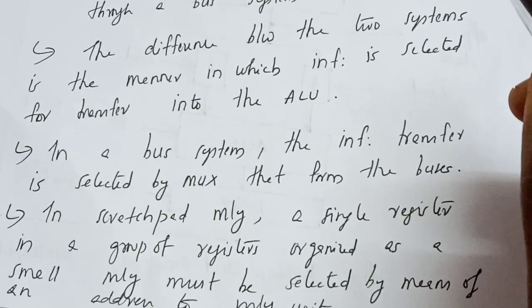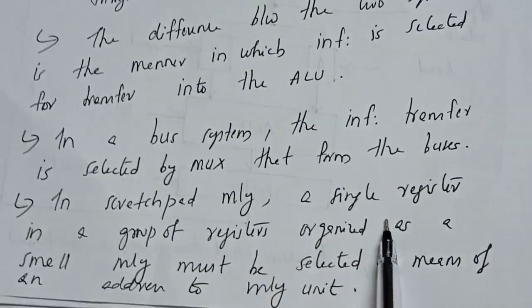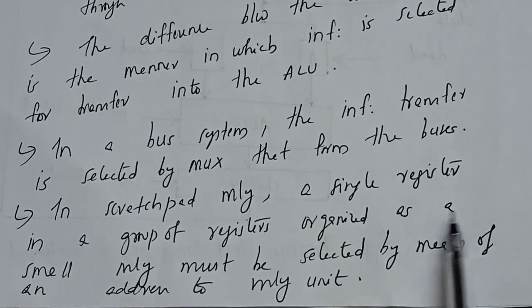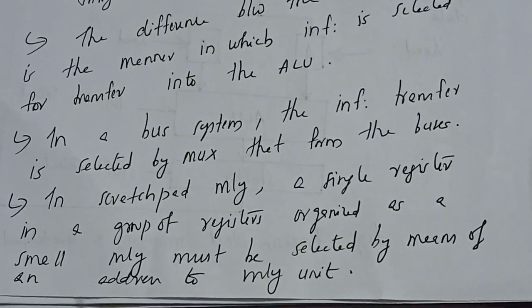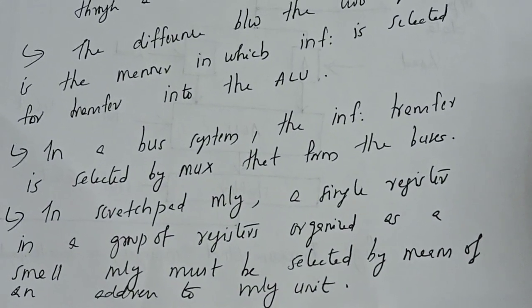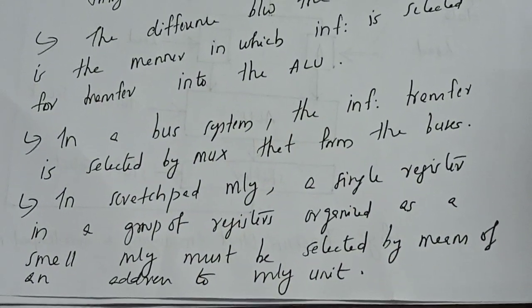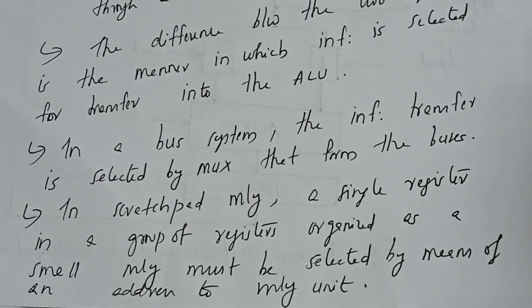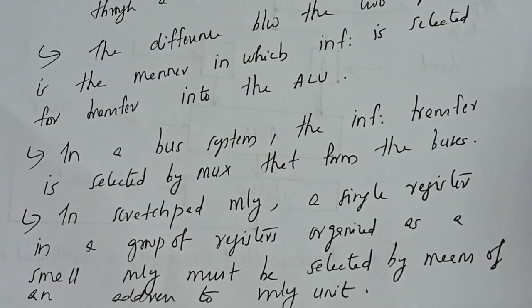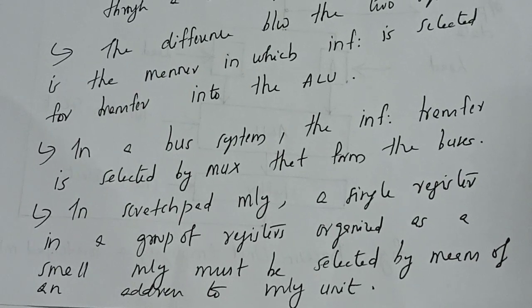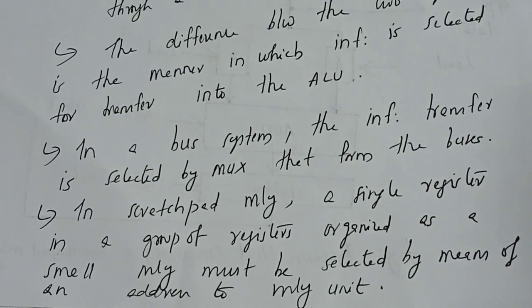In a scratchpad memory, a single register within a group of registers organized as a small memory must be selected by means of an address to the memory unit. In scratchpad memory, we have many registers enclosed as a memory unit, and if we want to access a particular register, we can use the concept of addresses to access that register.